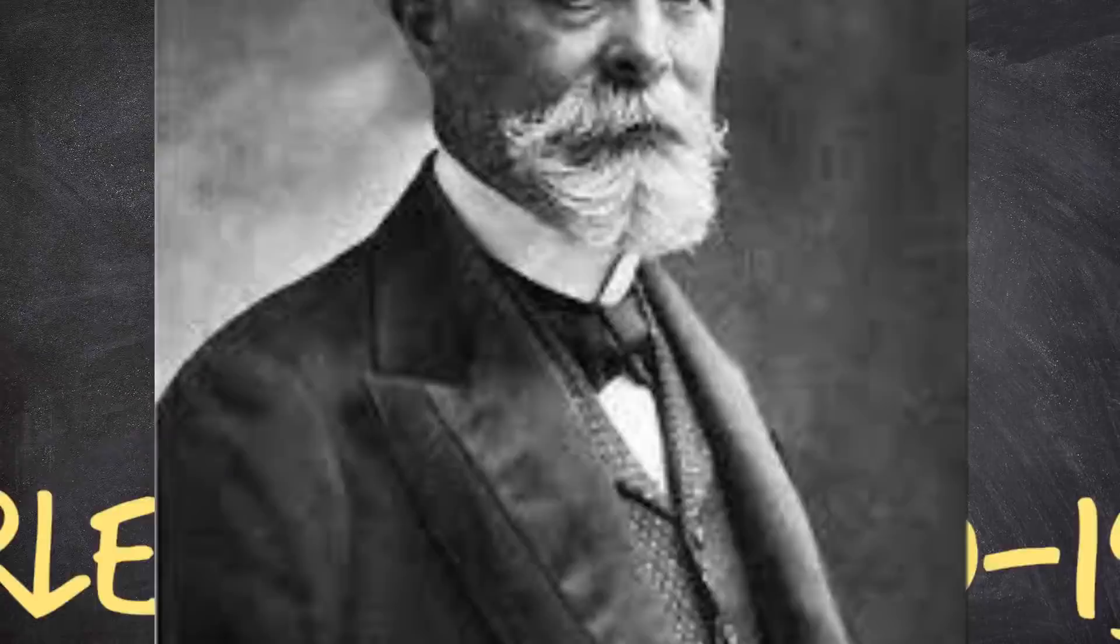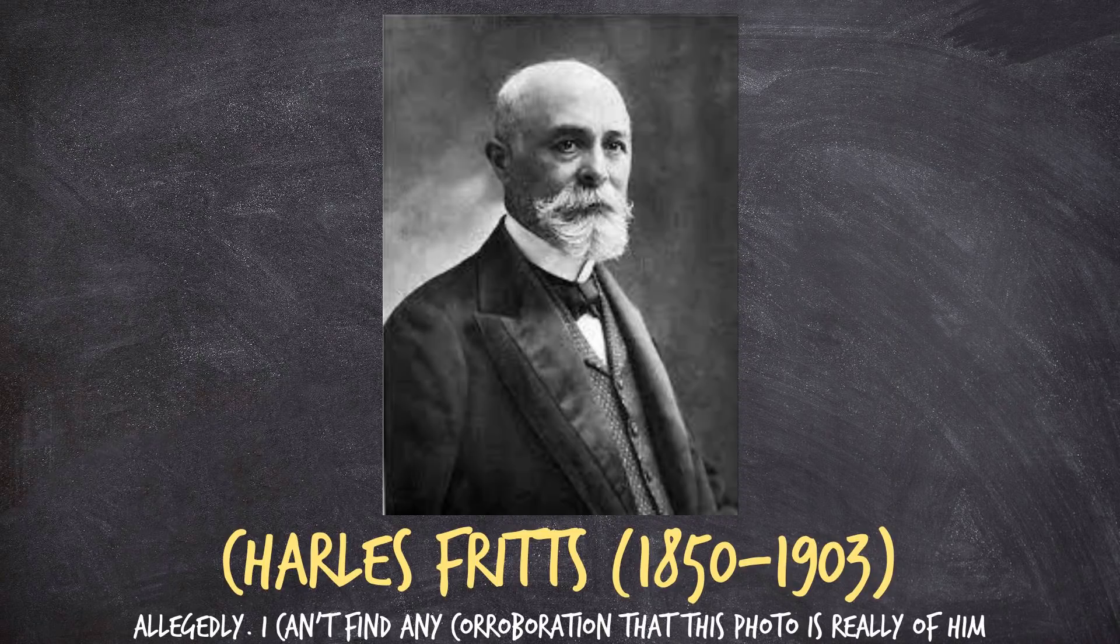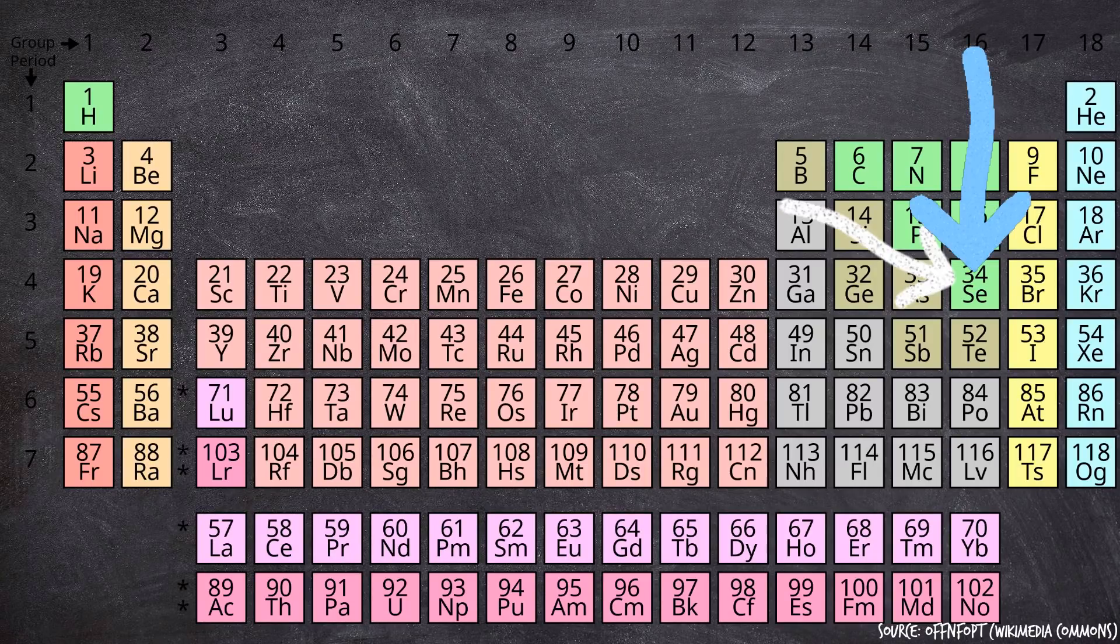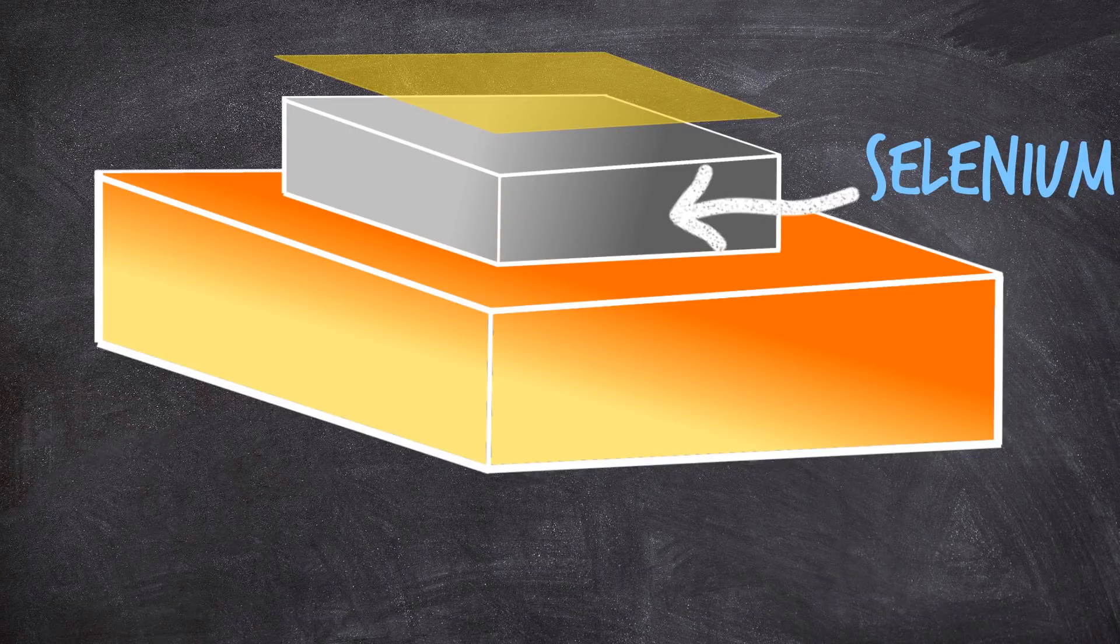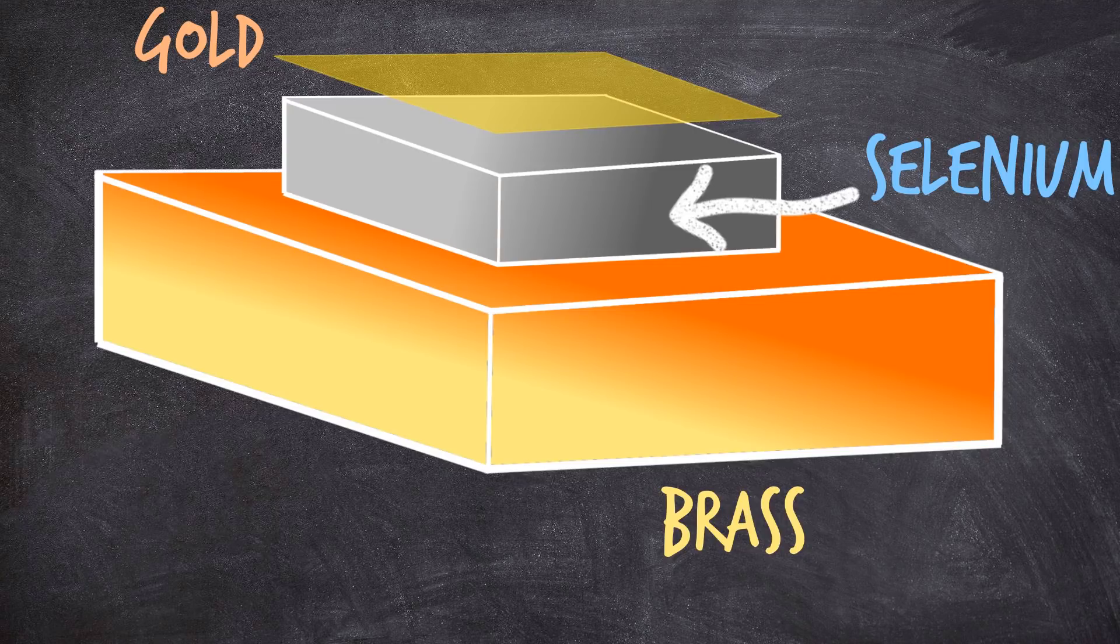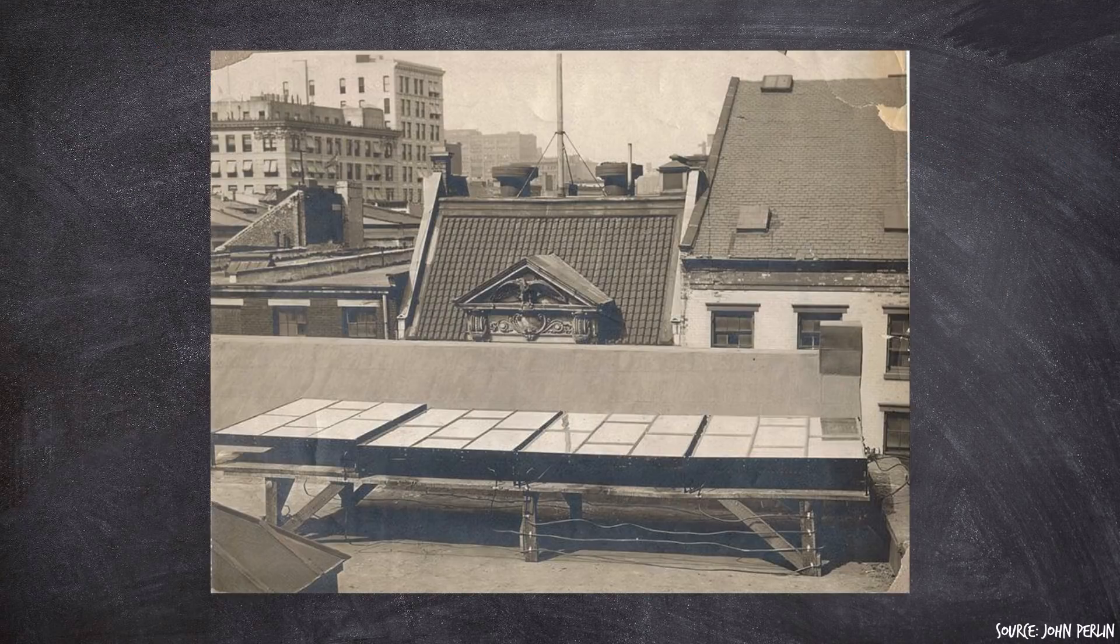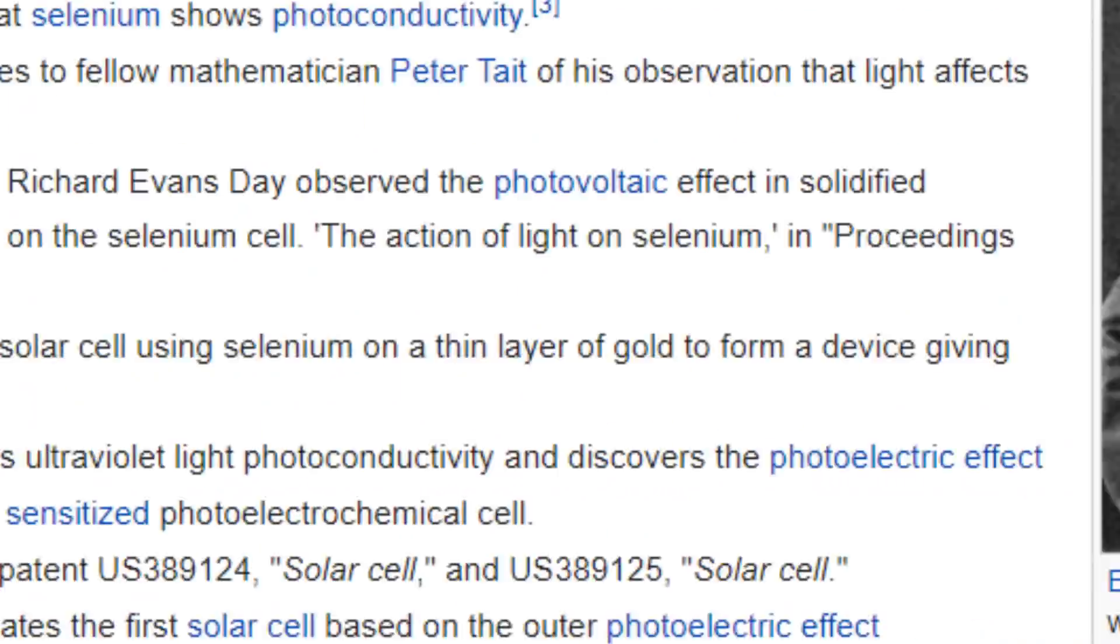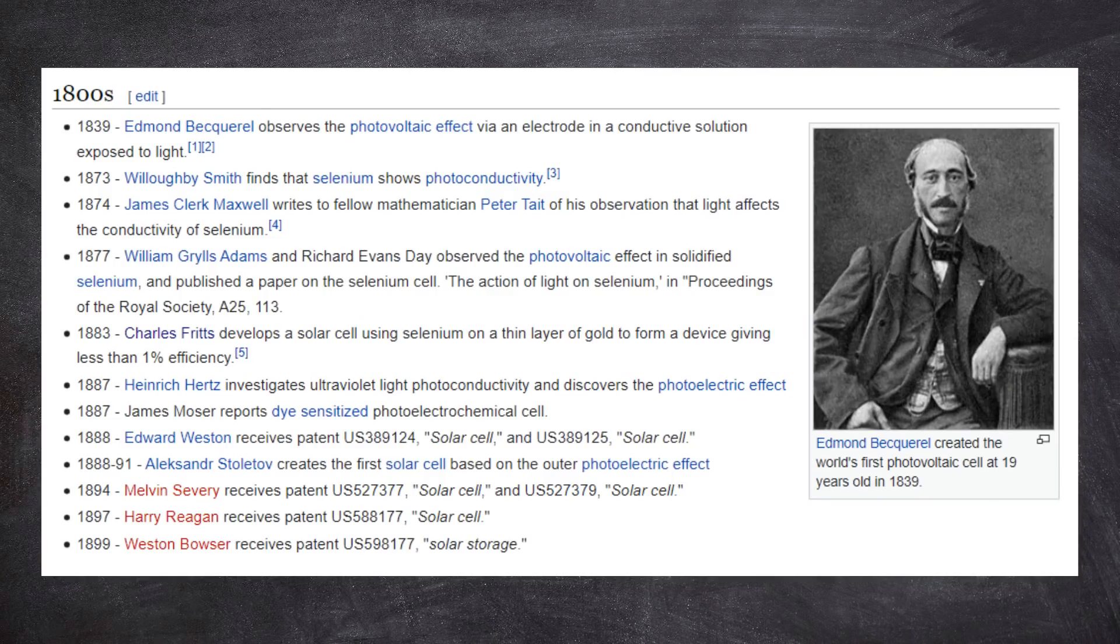Now, Charles Fritz was an inventor, and in 1883 he realized that if he took a slab of selenium and sandwiched it between two thin layers of different metals, specifically he used brass on the bottom and a thin layer of gold on the top, that when he shone sunlight on this material sandwich, he would get a small electrical current.